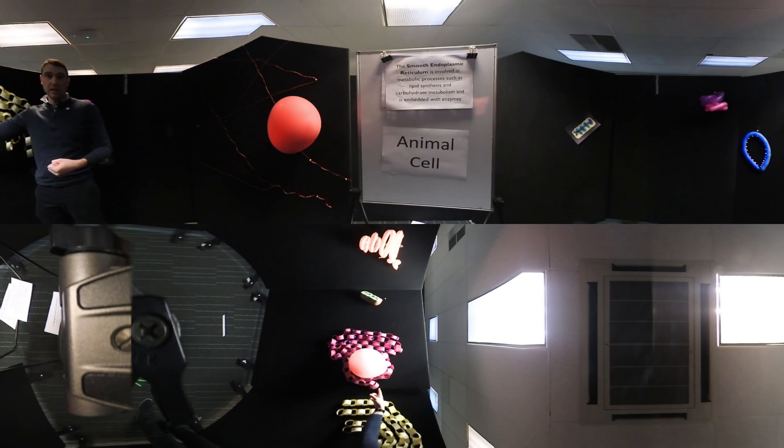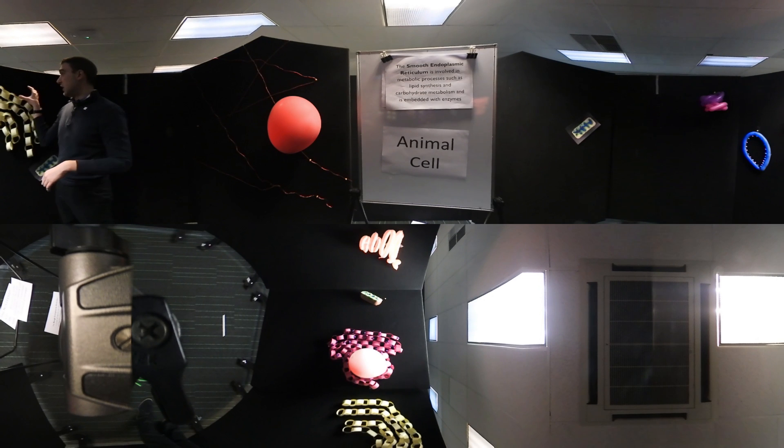Under a microscope the rough ER looks very rough because it's got all these tiny ribosomes. The smooth ER is very smooth. Let's have a look at our next structure now.